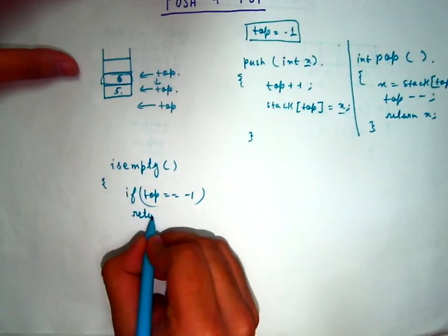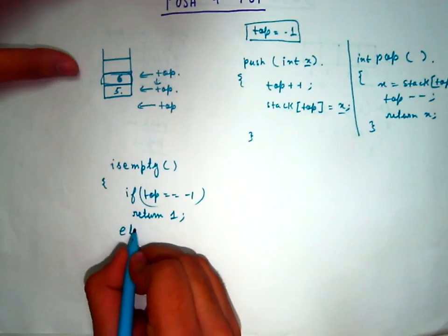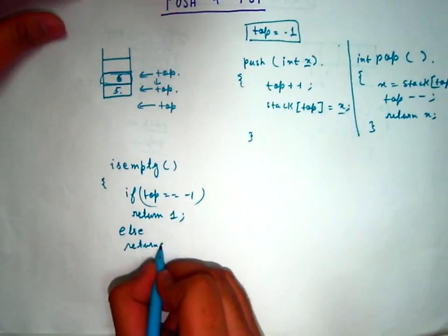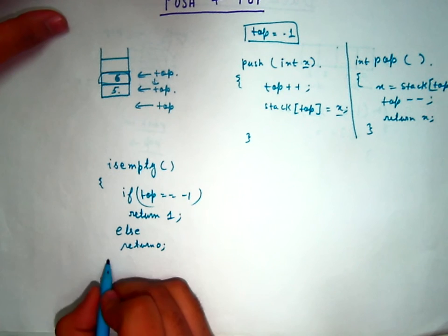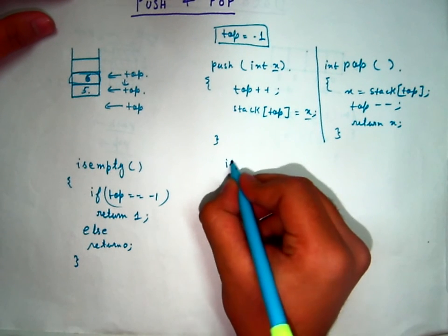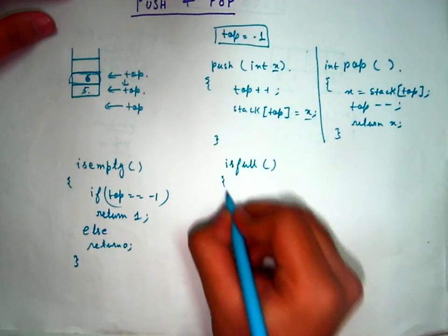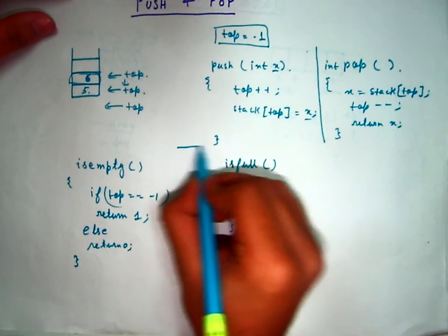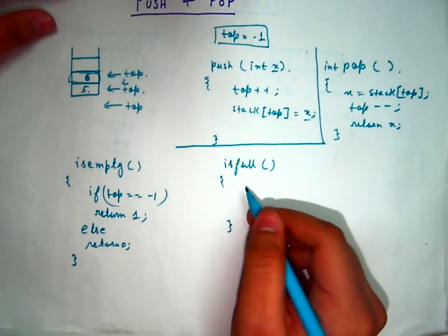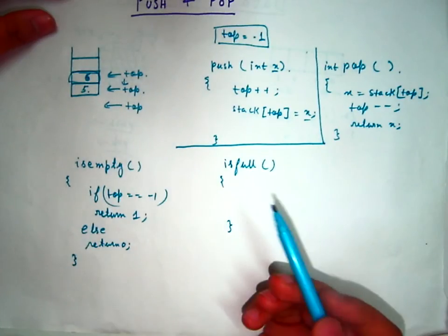So we return 0. Simple. Another function is to check if the stack is full or not. Now when can the stack be full? If the top position is equal to the stack size, at that point the stack is full.